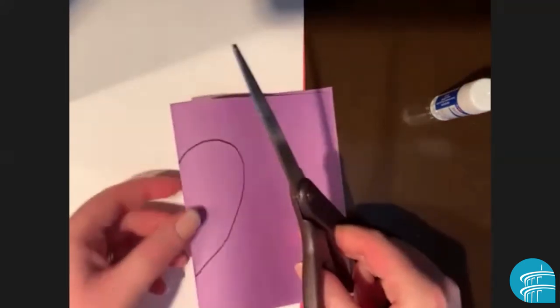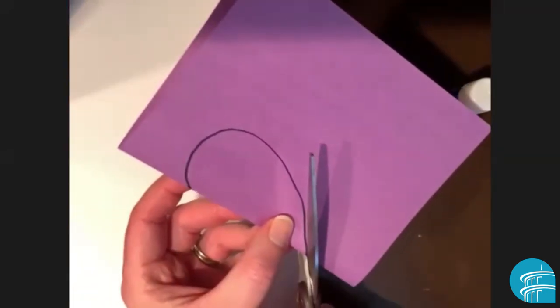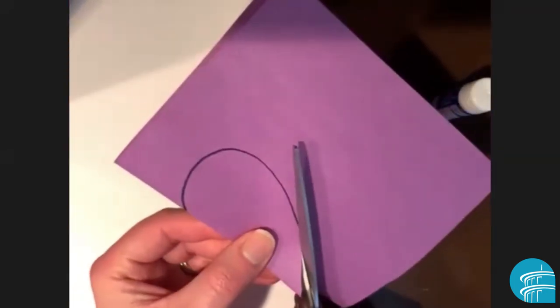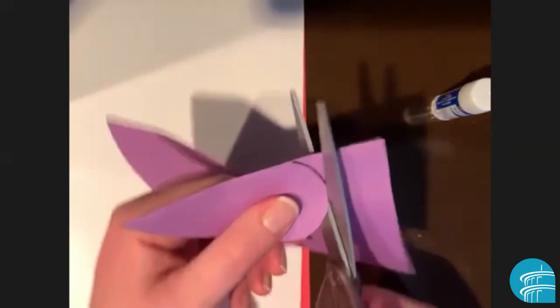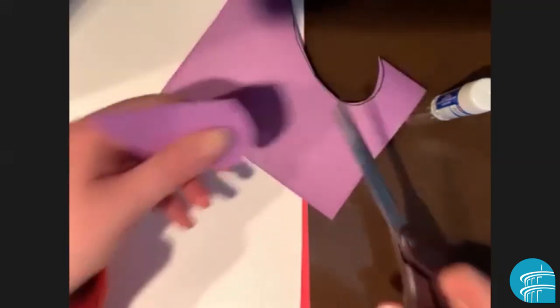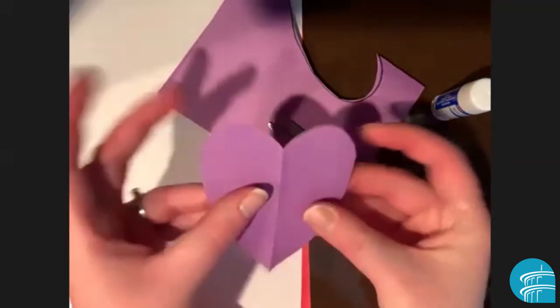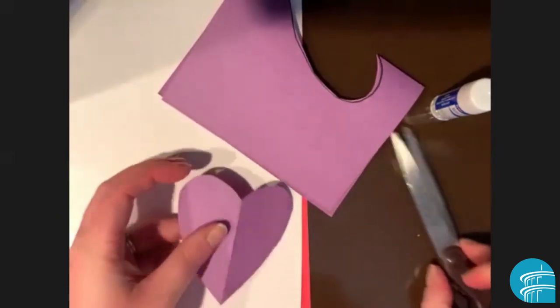Then I'm going to take my scissors and I'm just going to cut that heart out. Now you can see when I unfold that I have a nice symmetrical heart.